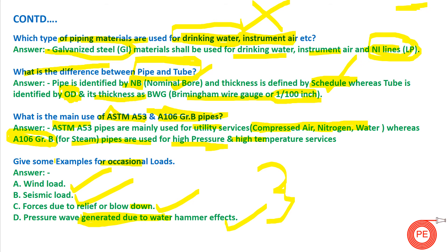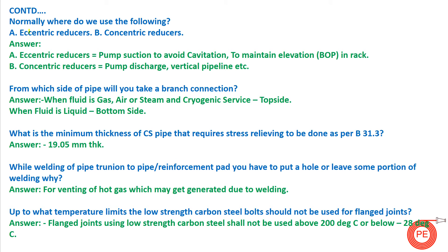Normally, where do we use eccentric reducers and concentric reducers? Eccentric reducers are used at pump suction to avoid cavitation and to maintain the bottom of pipe (BOP) elevation in pipe racks. They also help eliminate air bubbles entrapped in pump suction. Concentric reducers are used at pump discharge and in vertical pipelines.